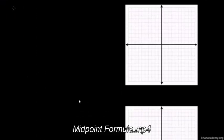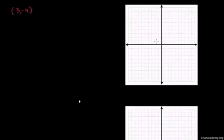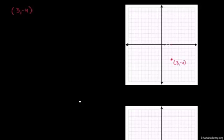Let's say I have the point 3, negative 4. So that would be over 3, and then down 4 — so that's 3, negative 4. And I also have the point 6, 1. In the last video, we figured out that we could just use the Pythagorean theorem if we wanted to figure out the distance between these two points. We just drew a triangle there and realized that this was the hypotenuse.